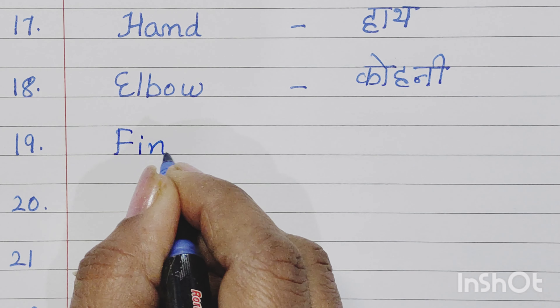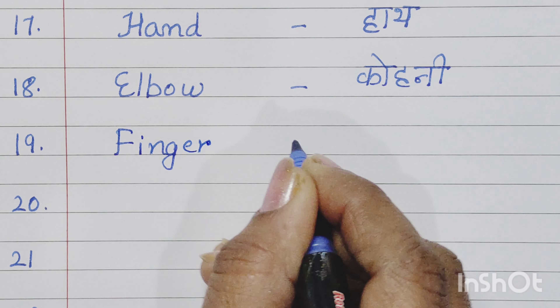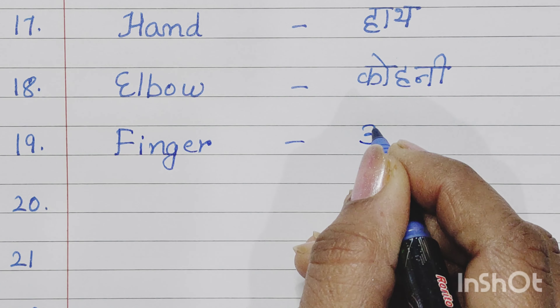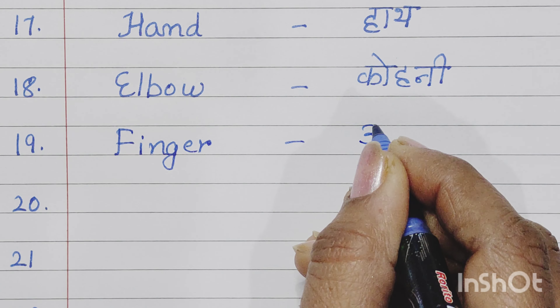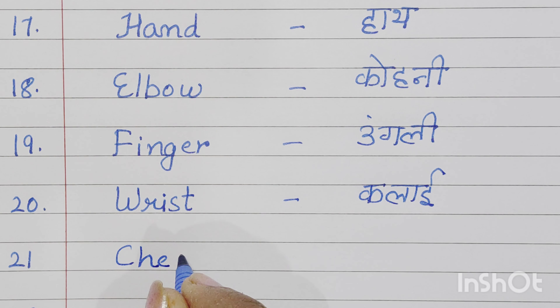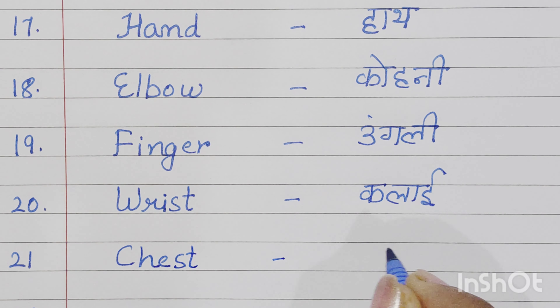Eleventh number is tongue, T-O-N-G-U-E, tongue means jeeb. Twelfth number is tooth, T-O-O-T-H, tooth means daat. We say tooth for one tooth and teeth for many teeth.